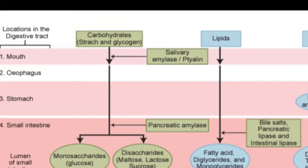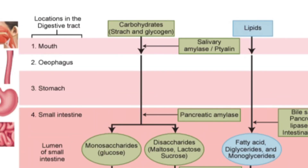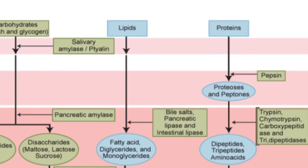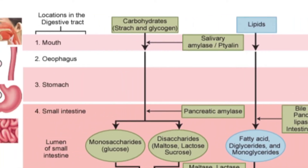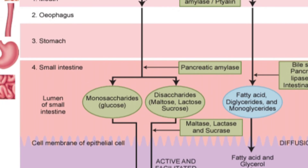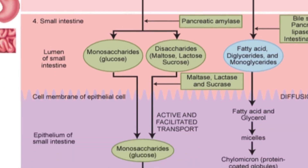Now let's look at the process of digestion and absorption. For carbohydrates: digestion starts in the mouth, where starch and glycogen are acted upon by salivary amylase. From the mouth, food passes through the esophagus to the stomach, and then to the small intestine.